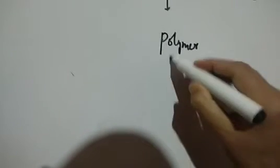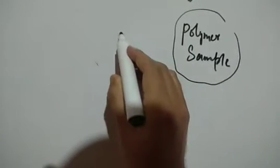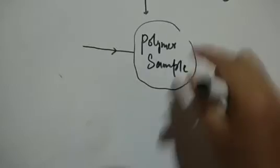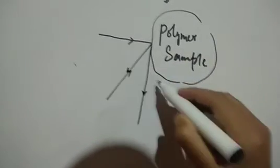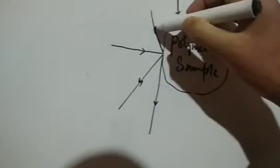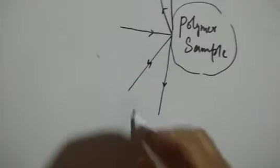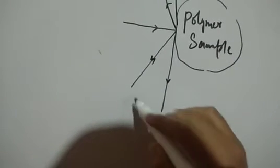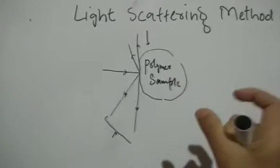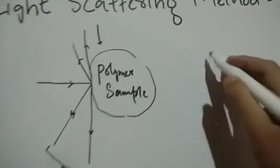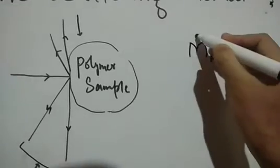Joh polymer sample hai jiska hamein molecular weight nikalna ho, we will incident some light on that polymer sample, and then the polymer sample will scatter the light at different angles. That scattered light — its intensity — will be detected. The intensity of that scattered light will be used to get the molecular weight of the sample, which is the weight average molecular weight.